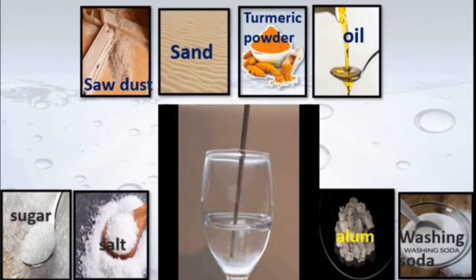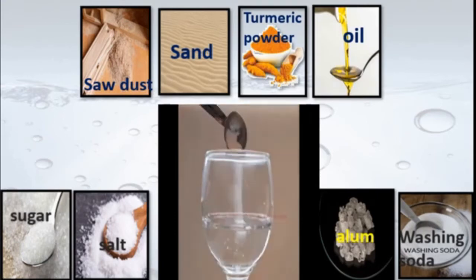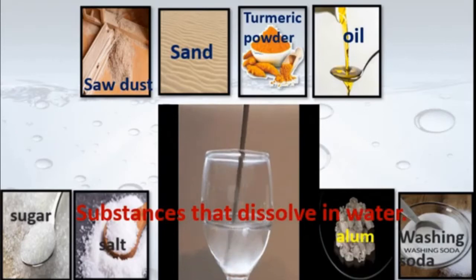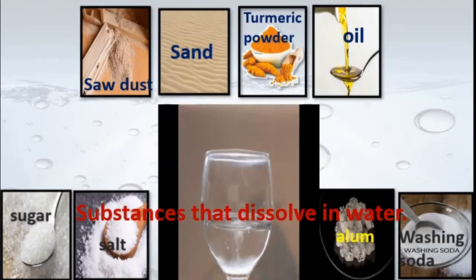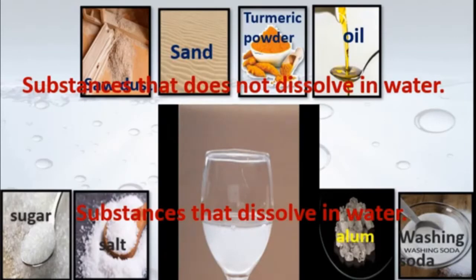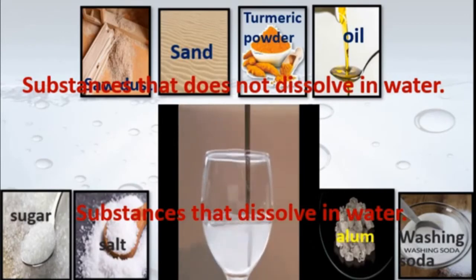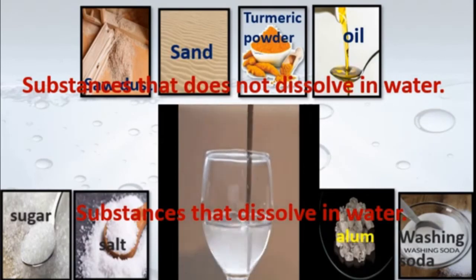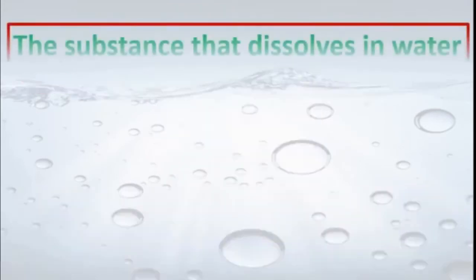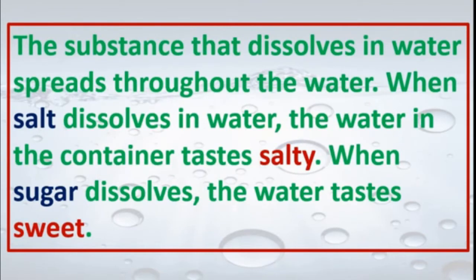From the given substances we made two different lists. Sugar, salt, alum, and washing soda dissolved in water — they disappear. Sawdust, sand, turmeric powder, and oil do not dissolve in water. From this experiment we came to know that some substances dissolve in water while some do not.